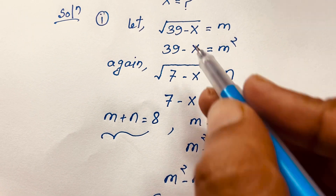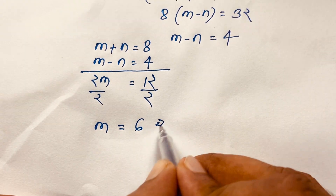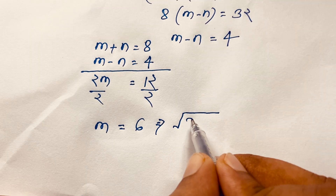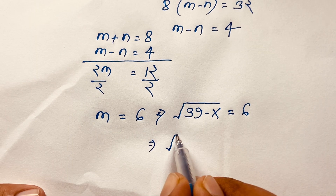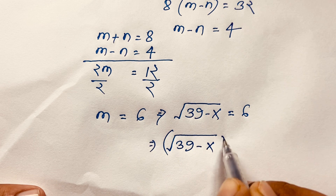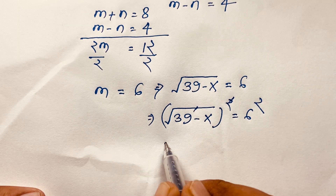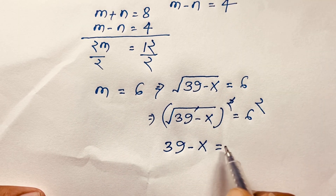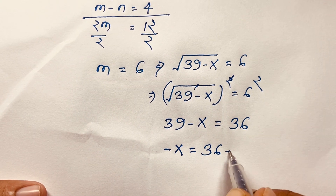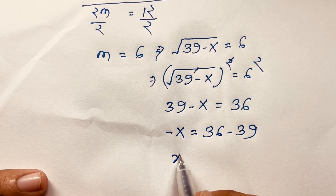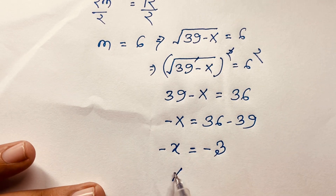Since m equals square root of (39 minus x), we substitute back: square root of (39 minus x) equals 6. Squaring both sides: 39 minus x equals 36. Therefore, negative x equals 36 minus 39 equals negative 3, so x equals 3. This is our final answer for Method 1.